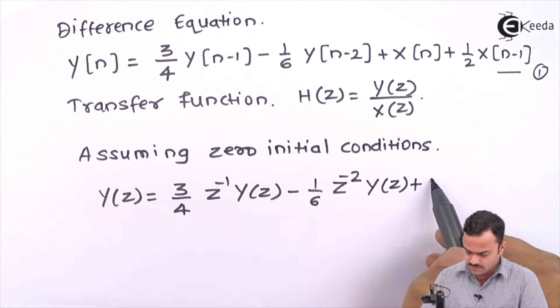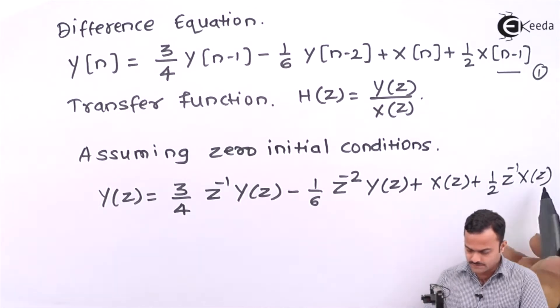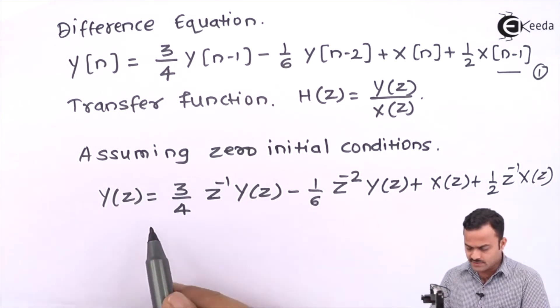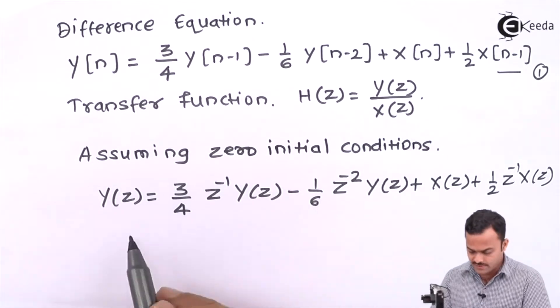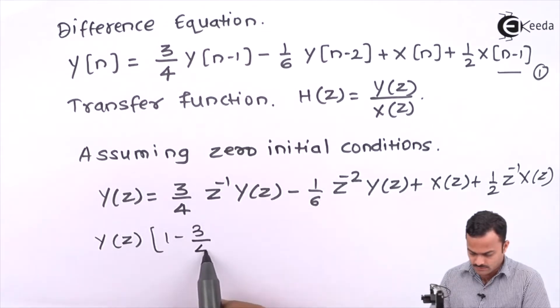Let's rearrange the terms. I will take this term on the left side, so we get Y(z) common inside bracket: 1 - 3/4 z^(-1) + 1/6 z^(-2).